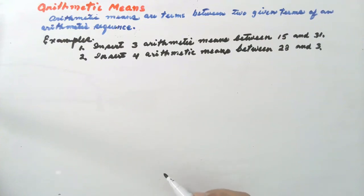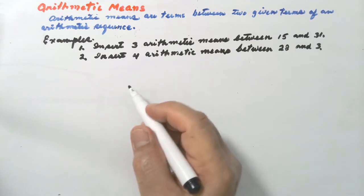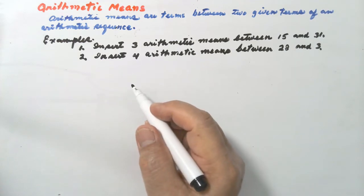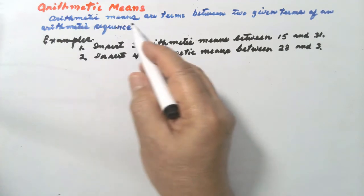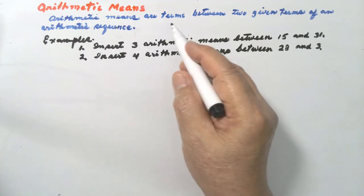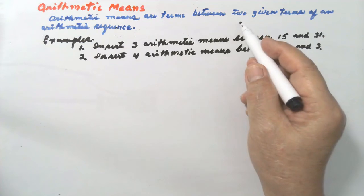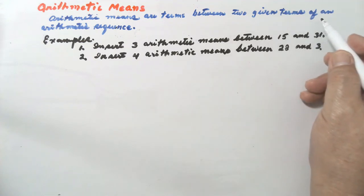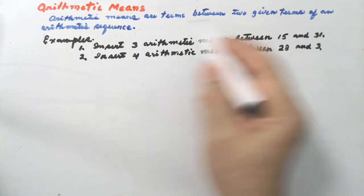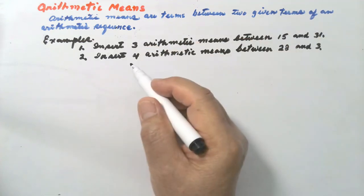Our topic for today is about arithmetic means. Arithmetic means are terms between two given terms of an arithmetic sequence.